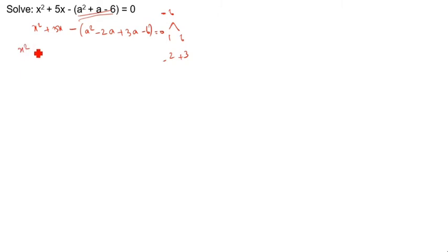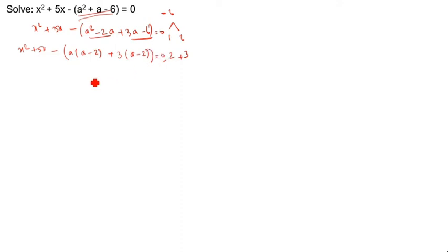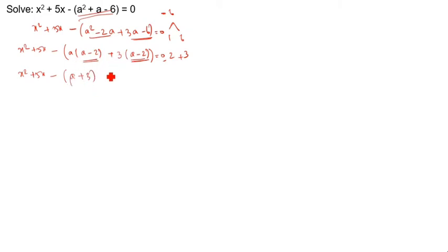So we write the bracket as: a squared minus 2a plus 3a minus 6 equals 0. After that x squared plus 5x minus — take this group and this group. 'a' is common here, so a(a minus 2) plus 3(a minus 2) equals 0. Both should come to the same factor, otherwise the sum is wrong. So a minus 2 is the common factor.